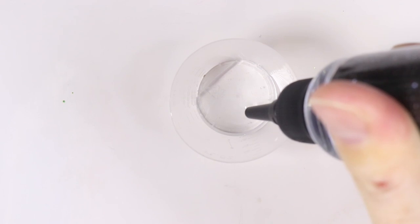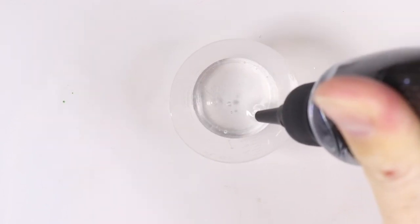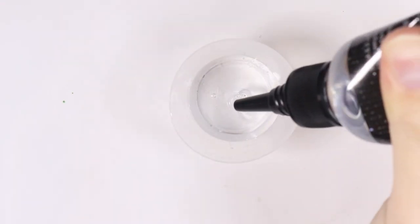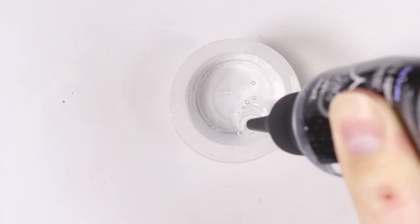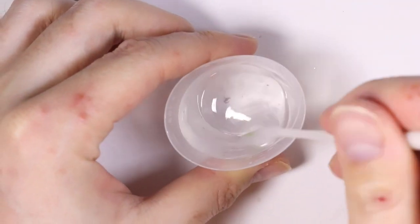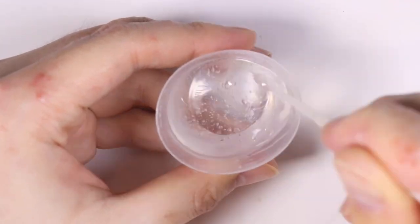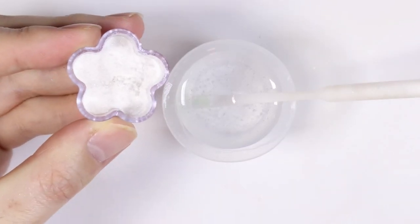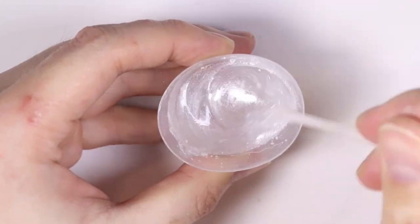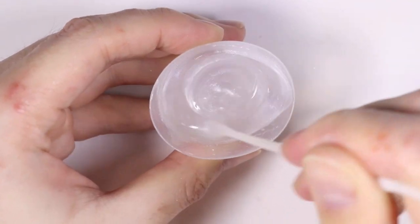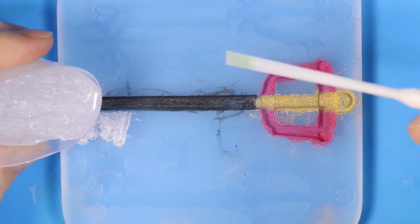And I'm mixing two part resin and measuring out two equal parts. I'm mixing it together and I just added a little bit more pearl pigment just to give it some color and I filled the mold.